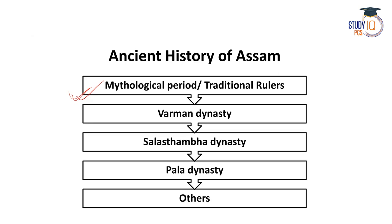The real political history of Assam involves considerable evidence such as stone inscriptions, coinage, copper plate inscriptions, and other considerable evidences. The real political history of Assam begins with the Varman dynasty, followed by the Salastambha dynasty, then the Pal dynasty, and other later kings of the ancient period.